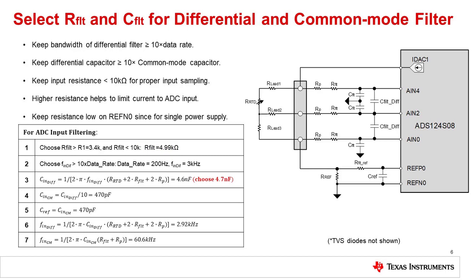The actual value selected isn't critical, as long as it is above the minimum of 3.4K. In step 2, we choose the differential cutoff frequency. It is recommended to set this cutoff at least 10 times greater than the data rate. In this example, the data rate is set to 200 Hz, so 3 kHz is a good choice for the cutoff. In step 3, we calculate the value for the differential filter capacitor and round to the nearest standard value. In step 4, we divide the differential capacitor by 10 to find the common mode capacitor. Selecting common mode capacitors as 10 times smaller than the differential capacitor is a common practice to avoid converting common mode signals to differential. Step 5 points out that the reference filter is the same as the common mode filter.